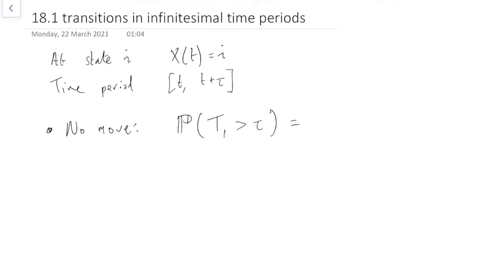So that's the tail probability of an exponential distribution, which is e^(-qi*tau). Remember tau is extremely small. So what does e to the minus something extremely small look like?